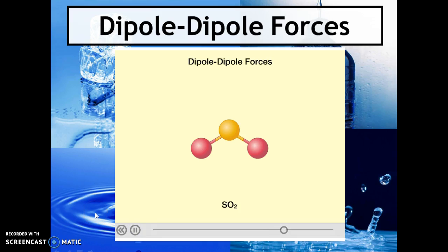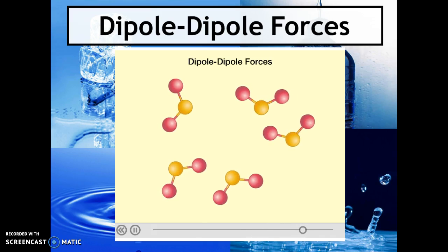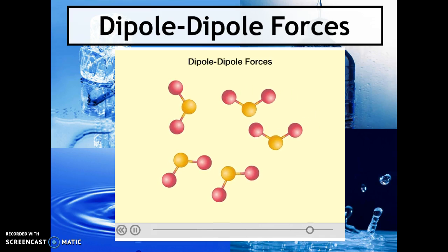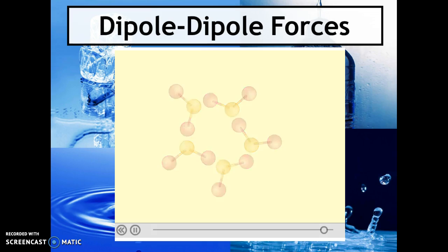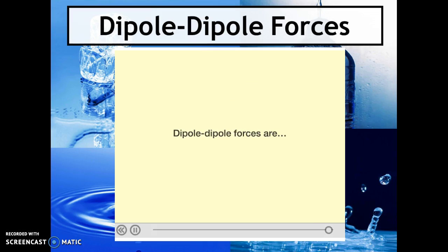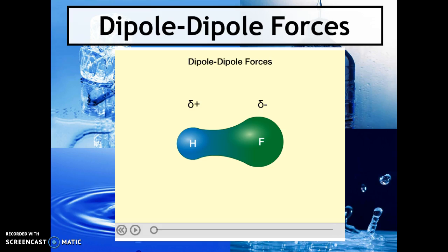Sulfur dioxide is an asymmetrical molecule with polar bonds — it has a bent shape due to unshared pairs of electrons on the central atom — making it polar. When polar molecules like SO2 are close to one another, they align so the positive end of one molecule points toward the negative end of another. These attractions among polar molecules are called dipole-dipole forces, and they occur only between polar molecules.